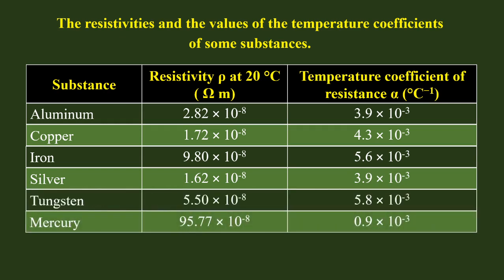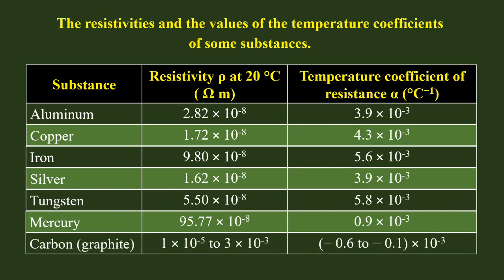If you look at the temperature coefficient of resistance, you can see the negative value of the temperature for carbon and non-metals. So you can see a negative slope on the graph.